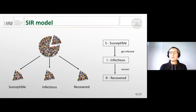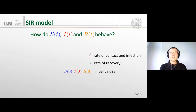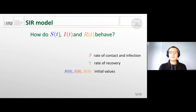We define functions S(t), I(t), and R(t) giving the number of people in each state at time t, and we want to know how these functions change over time. We have parameters: beta is the rate of transmission from susceptible to infectious — the rate of contact and infection — and gamma is the transmission rate from I to R, the rate of recovery. We also have initial values for susceptibles, infectious, and recovered.